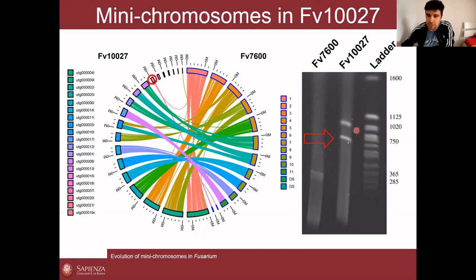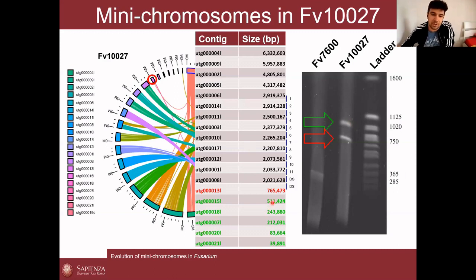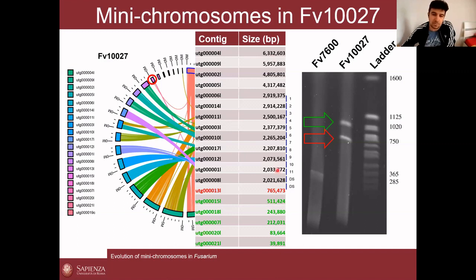Looking at the pulsed-field gel, there is also an additional band at approximately 1 MB that is not present in the Fusarium verticillioides reference lane. Going back to the contig list, we have all the smaller contigs that together sum up to about 1 MB. So we think we have 11 core chromosomes, one fully assembled mini-chromosome of 750 KB, and a second mini-chromosome of approximately 1 MB that we were not yet able to fully assemble.